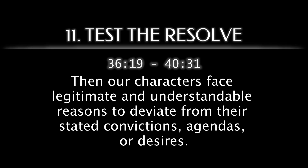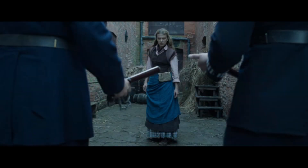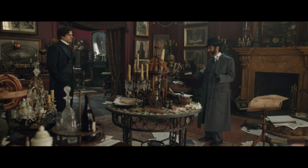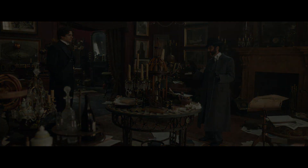Then, our characters face legitimate and understandable reasons to deviate from their stated convictions, agendas, or desires. Enola escapes Grail with evidence in hand, making herself a fugitive. Then, the Strahd rats her out to Sherlock.